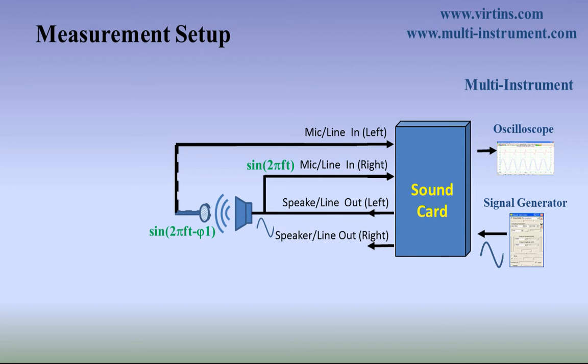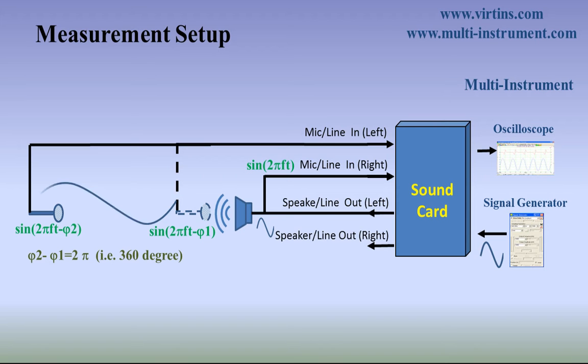If we move the microphone away from the speaker slowly along the speaker's axis, the phase difference between the two channels should change gradually and accordingly. When the change of phase difference equals 360 degrees, then the distance between the two microphone positions equals the wavelength.